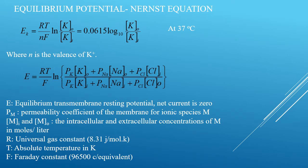The Goldman equation is expressed in terms of the resting potential Vr. K is the Boltzmann constant, T is the absolute temperature, Q is the charge of the electron, P_K is the permeability of the potassium ion, P_Na is the permeability of the sodium ion, and P_Cl is the permeability of the chlorine ion. The concentrations of potassium, sodium, and chlorine ions are given within brackets.